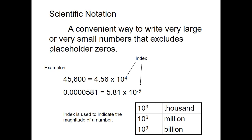The same method works with numbers smaller than one — you shift the decimal point to the right, and that gives you a negative index indicating a very small number. In the second example, we had to move the decimal point five places to the right to put it between the first two significant numbers, the five and the eight. So the number becomes 5.81 times 10 to the minus five. That's how we write numbers in scientific notation.